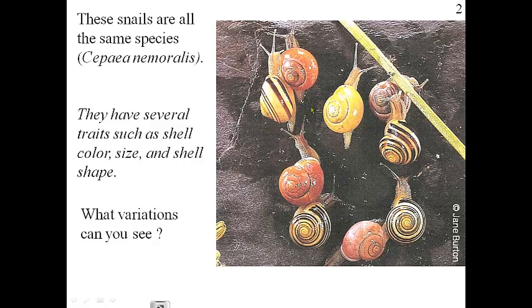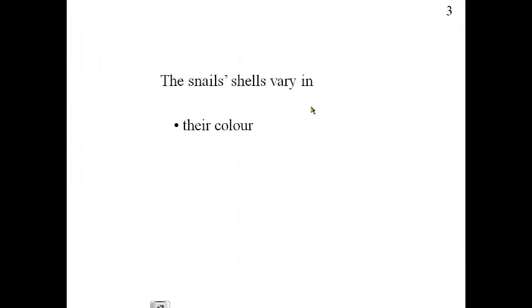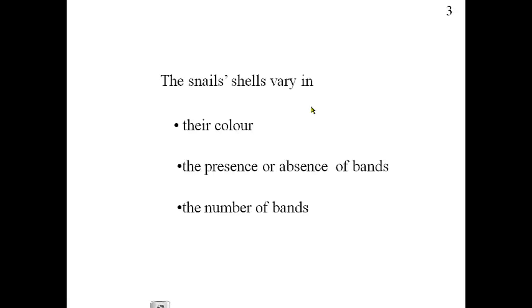The snail shells vary in their color — shell color is a trait, and the variation is that they have multiple different shell colors. The presence or absence of bands of color is a trait, and they all differ in that way. The number of bands in their shells also differs, which is another variation. So shell color, presence or absence of bands, and number of bands are all traits, with variations such as orange, yellow, or black-and-yellow shells, and shells having three, four, five, or six bands.